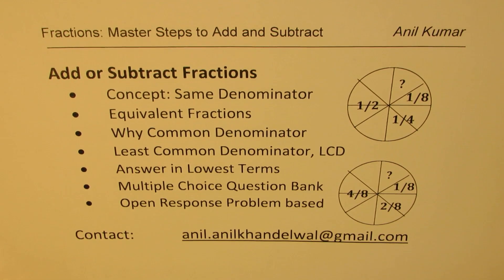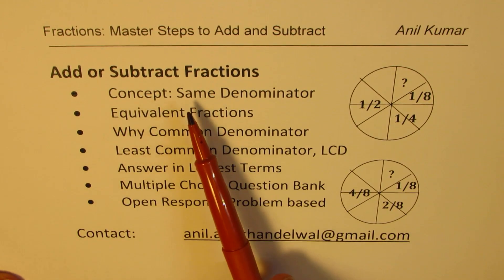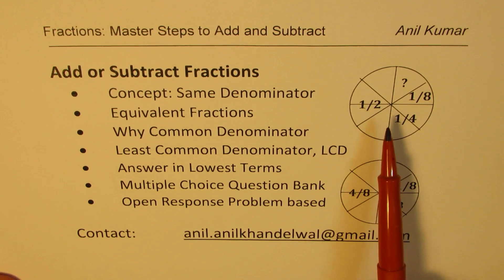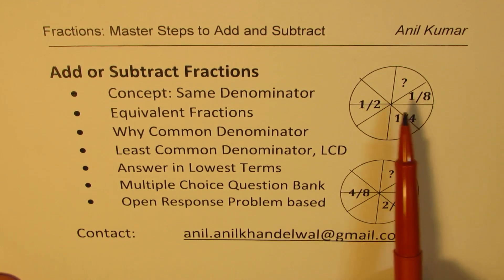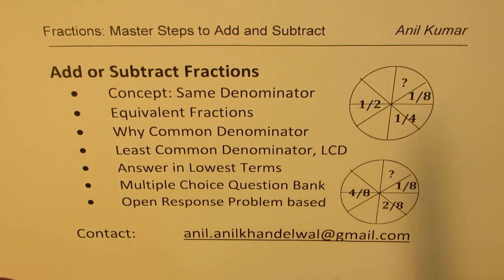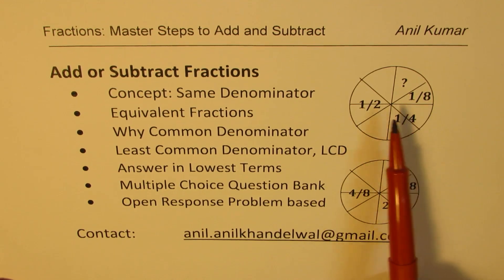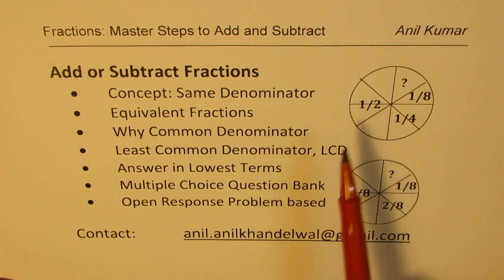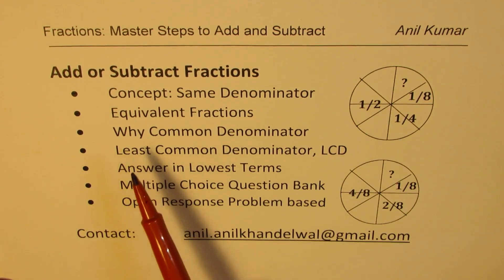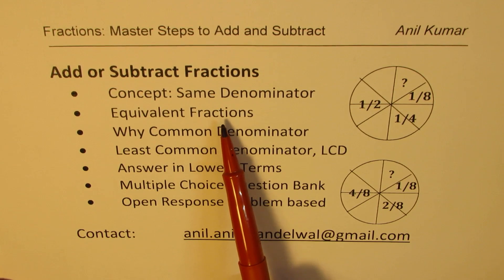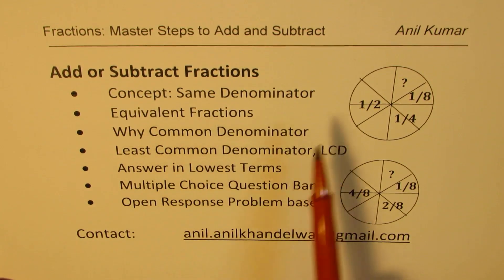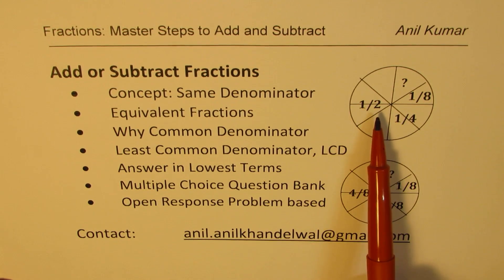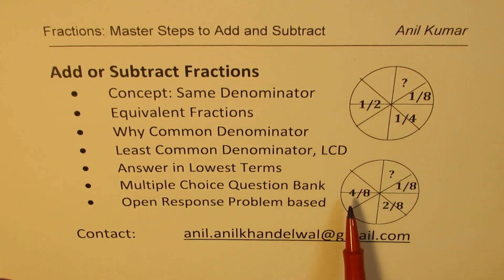The basic concept is that we have to get the same denominator. When we write one over two, one over four, one over eight — numbers like this are called fractions. If we have to add them up, we need to write them all with the same denominator. When we do that, we call them equivalent fractions.